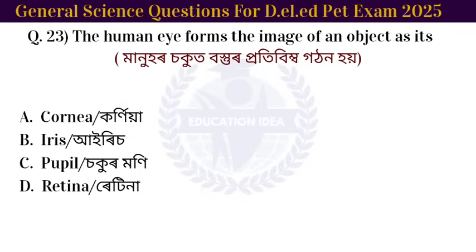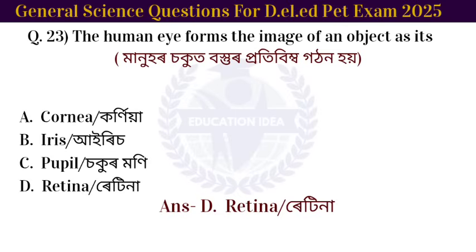Next question: the human eye forms the image of an object on the retina.